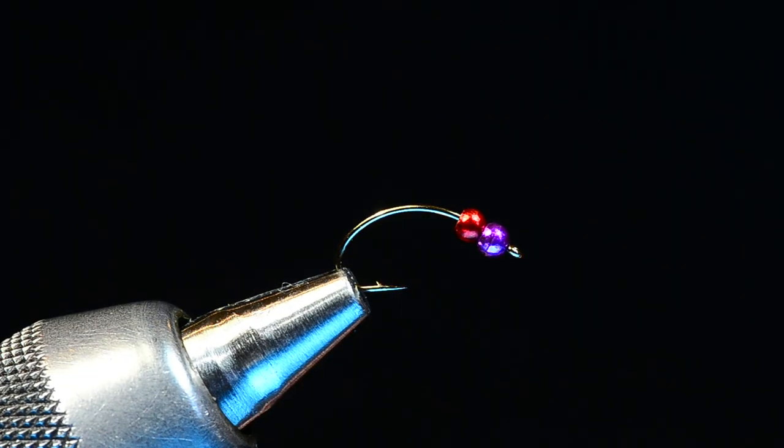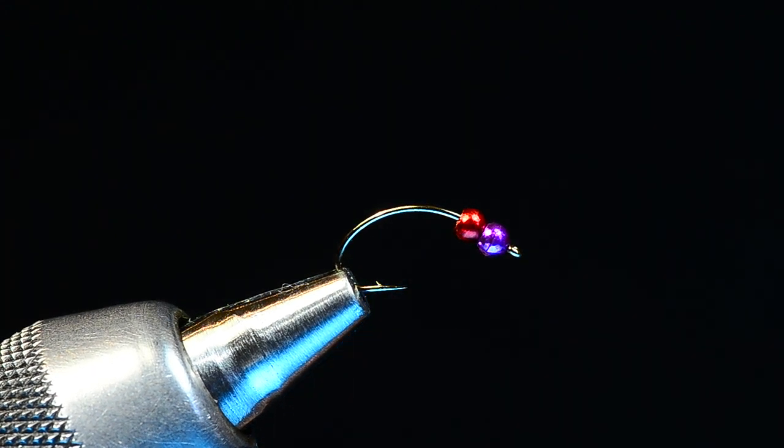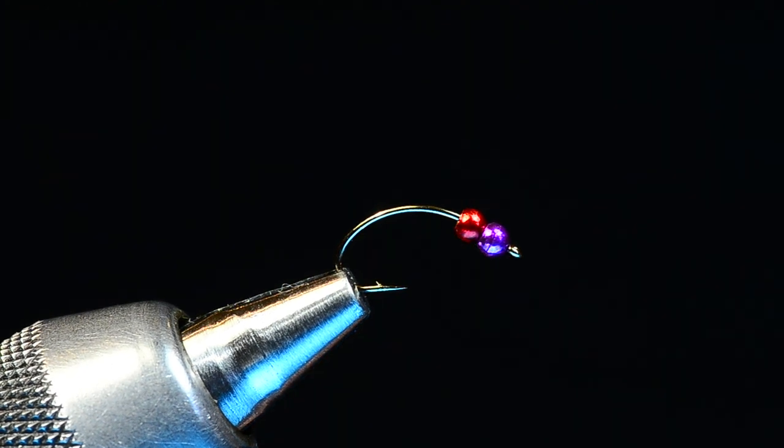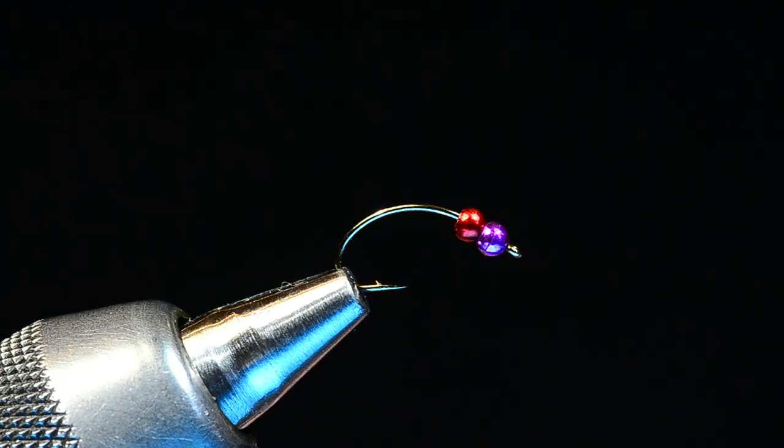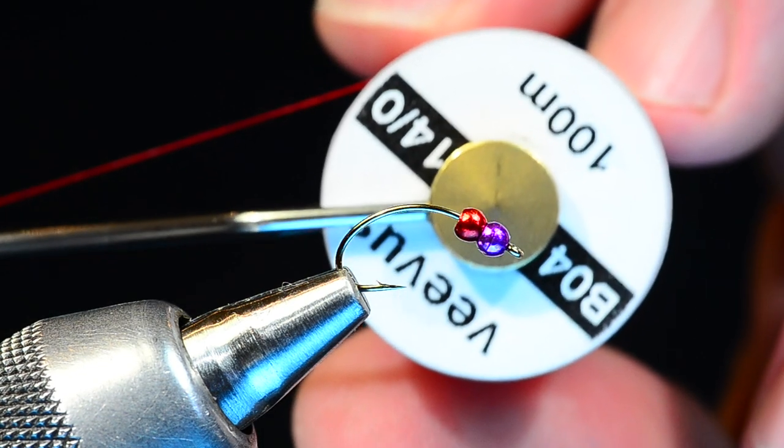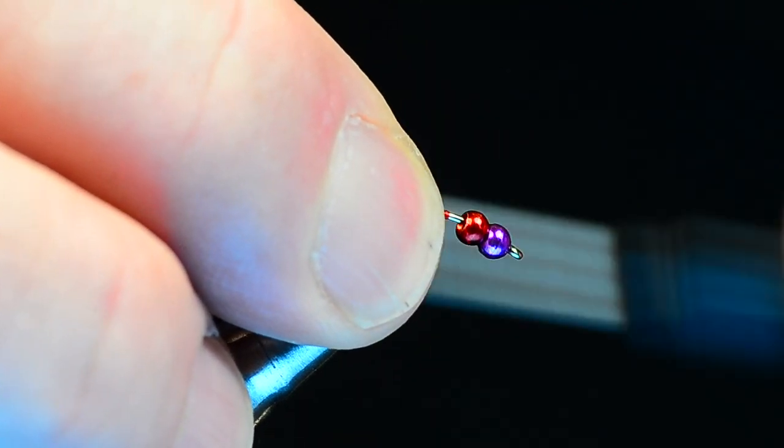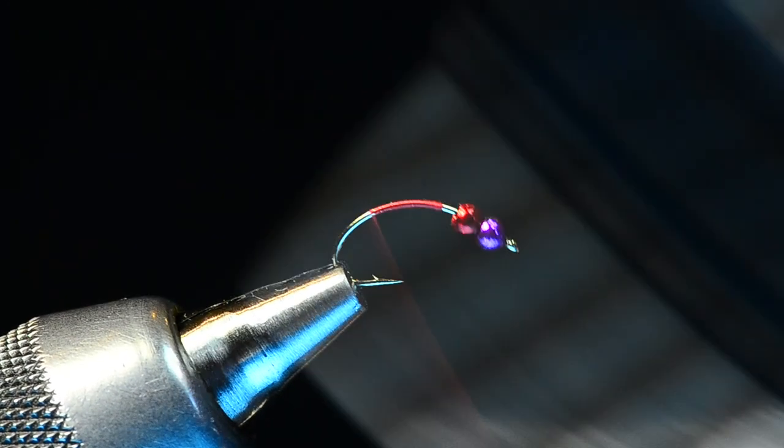Alright, we're about to tie the Problem Child. What I've got here in the vise is a Daiichi 1160 in a size 14 with two 3/32nd tungsten beads. I've got a purple and a red Umpqua Radiant tungsten bead on there. Now you can tie this in a variety of different sizes and there's also another Daiichi hook, the 1167, that is identical to this just with a black nickel finish and either one is acceptable. I'm going to start some red 14-0 Veevus thread just behind that first bead and I'm going to wrap back to just past the point on the barb.